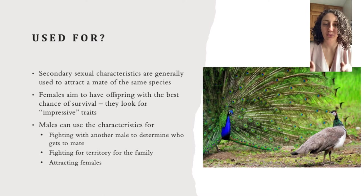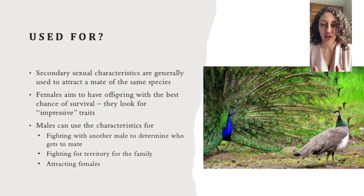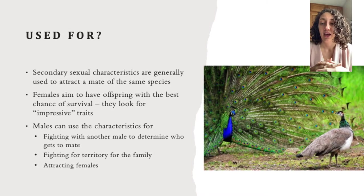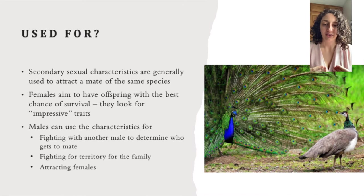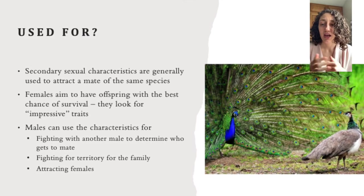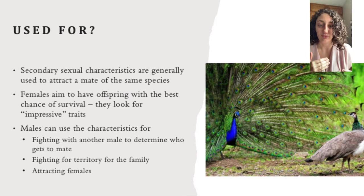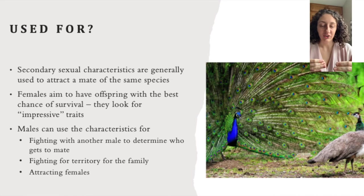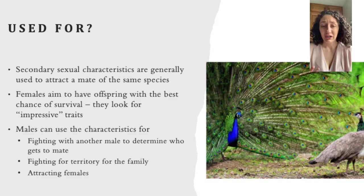Females always aim to have offspring with the greatest chance of survival, because that is what carries on their characteristics and their genes. So they look for impressive traits, which is why so many male animals have these really elaborate structures. These characteristics can be used to fight another male to determine who gets the mate, to fight for territory, or simply to attract the female.